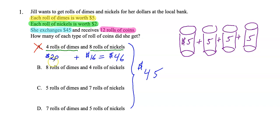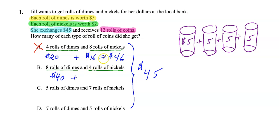Let's go to B. Here we have 8 rolls of dimes and 4 rolls of nickels. Each roll of dimes is worth $5, so $5 times 8 is $40, plus each roll of nickels is worth $2, and $2 times 4 is $8. When I total that up, I get $48. That does not match up with $45.